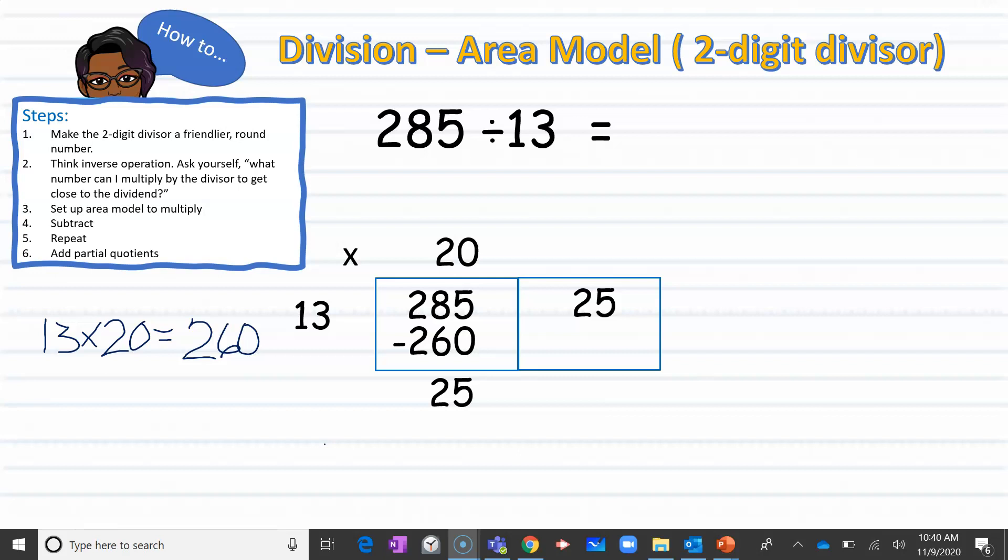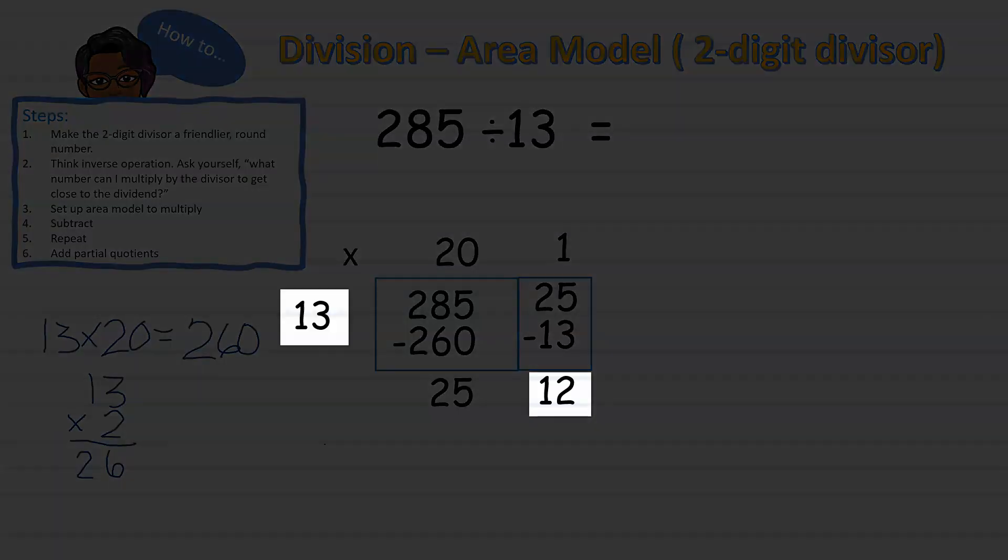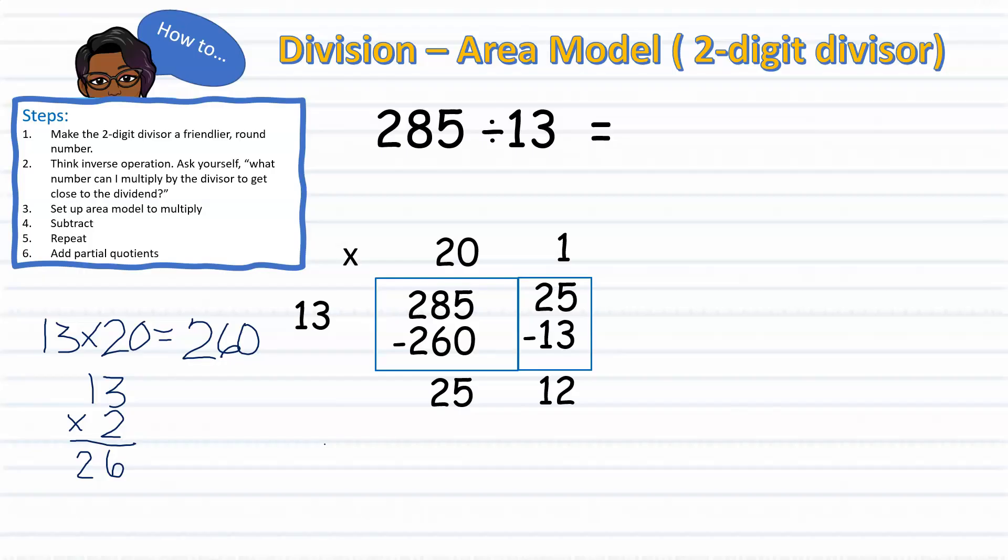I will need to double check and do some work off to the side to ensure that 13 times 2 does not go over 25. Since 13 times 2 is 26, that is more than 25, so then I will have to stick with 13 times 1. 1 times 13 is 13, I will subtract that from 25 to get 12. And since 12 is smaller than my divisor of 13, I know that I am done with division, and 12 will serve as my remainder.